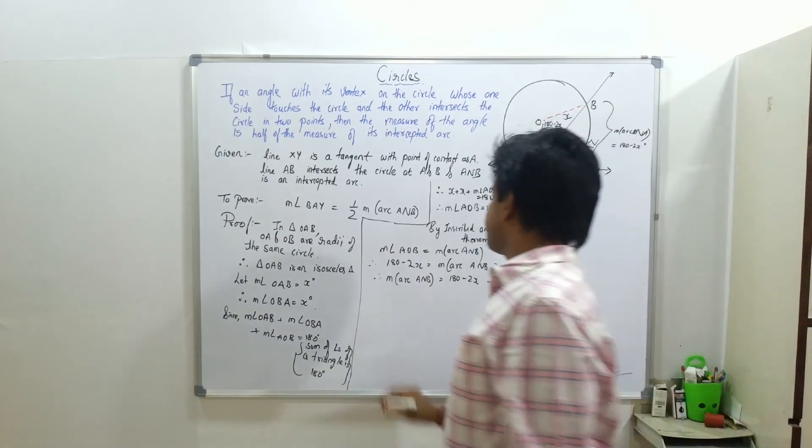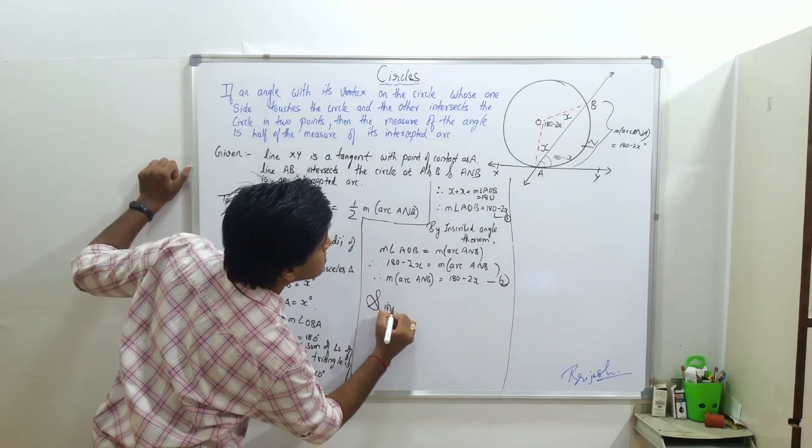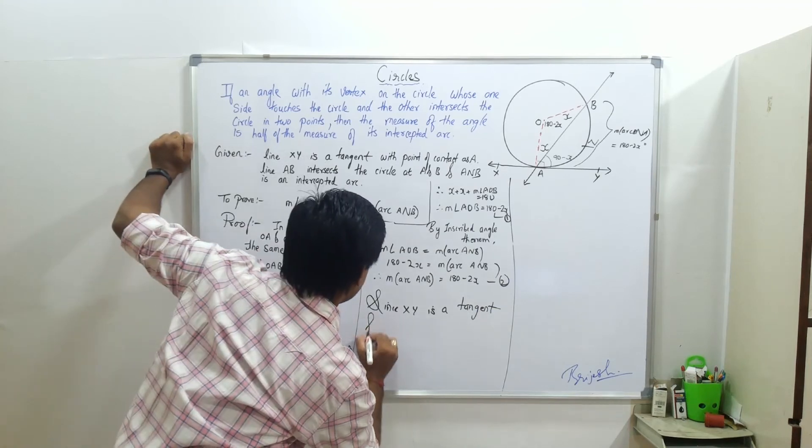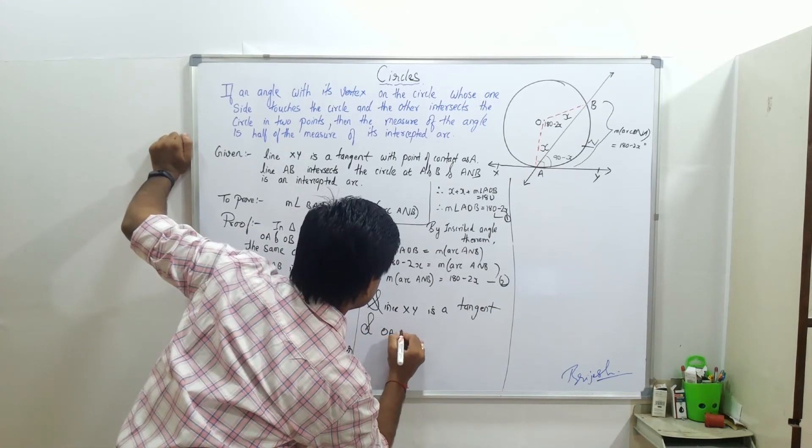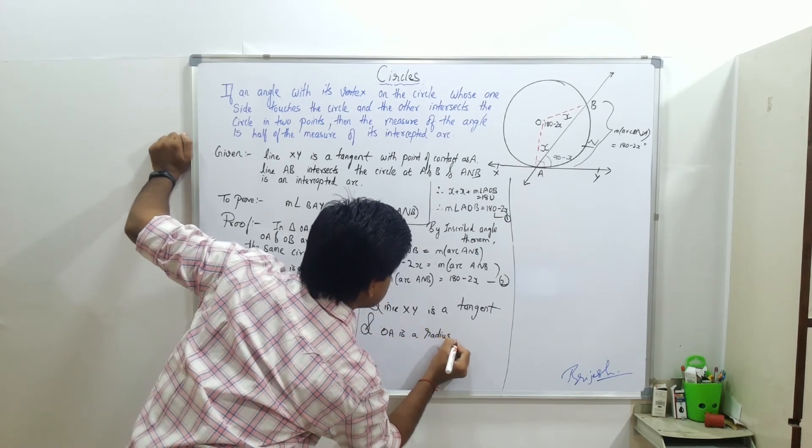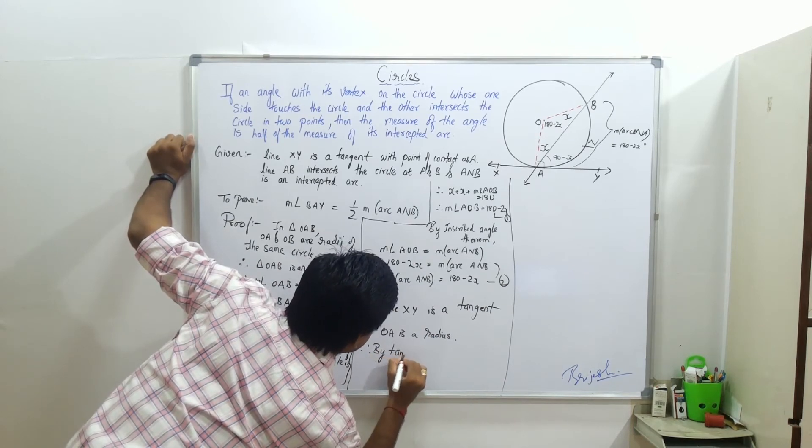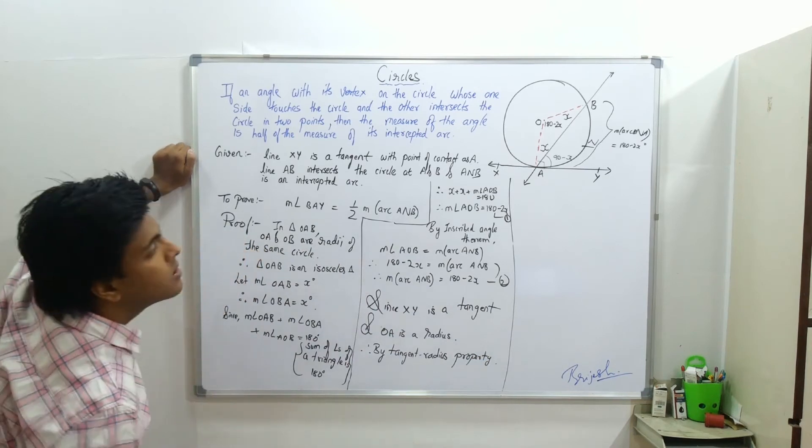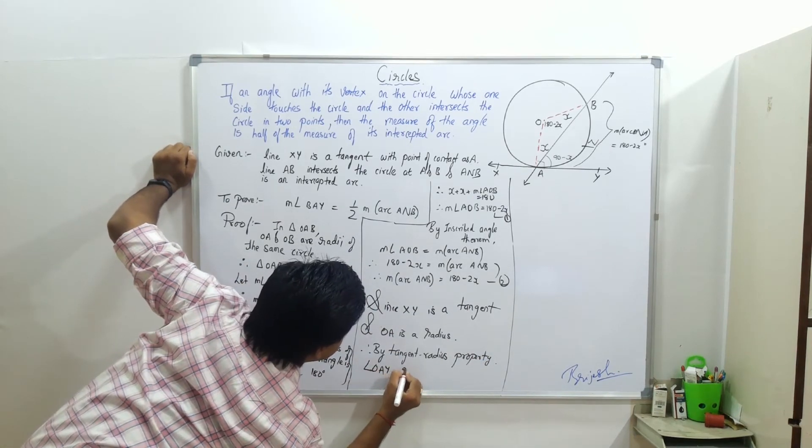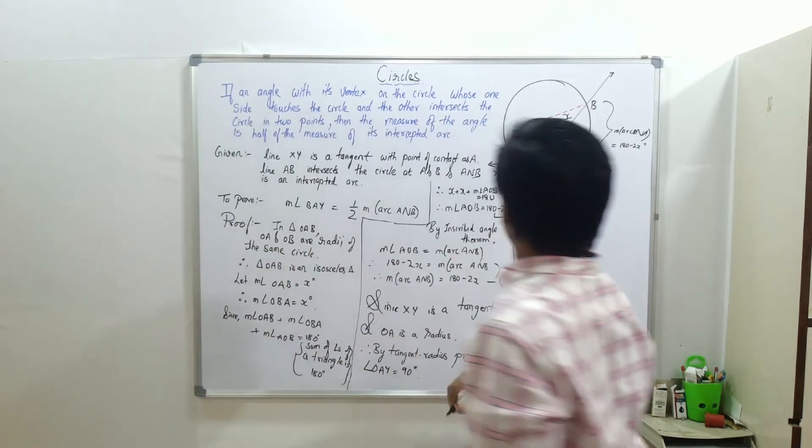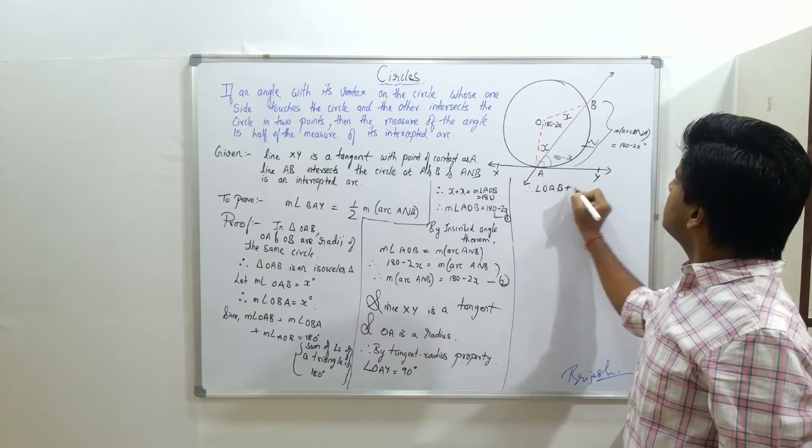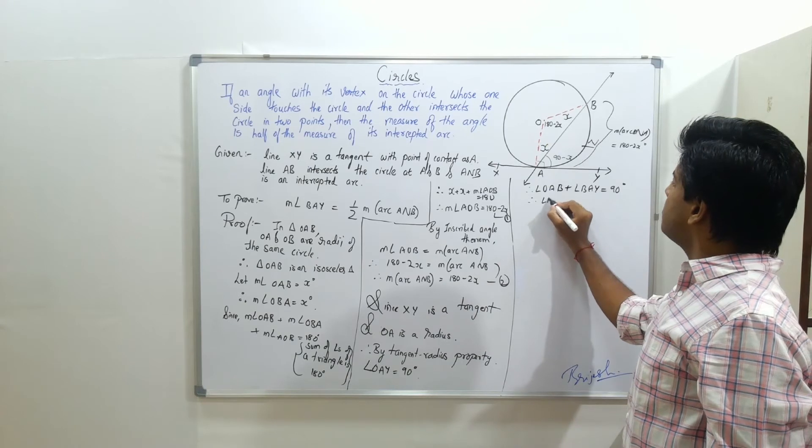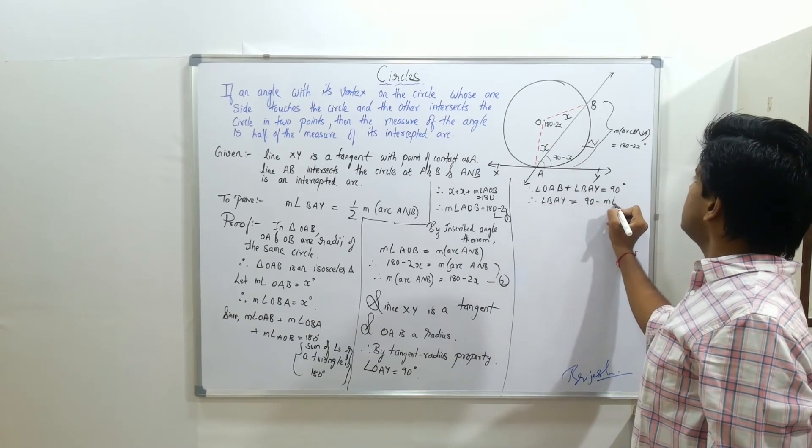Since XY is a tangent and OA is a radius, therefore by tangent-radius property angle OAY is equal to 90 degrees. Therefore, angle OAB plus angle BAY is equal to 90 degrees. Therefore, angle BAY is equal to 90 minus measure angle OAB.